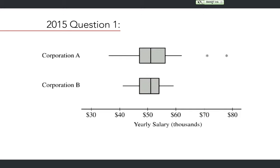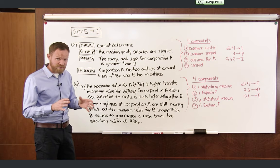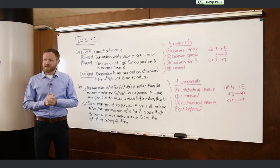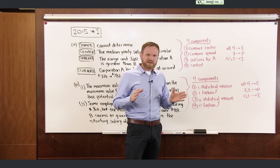For Part II, we think about why we might want to choose corporation B. What I noticed is that some employees at corporation A were still making the same $36,000 as when they were hired, whereas at corporation B the minimum value has increased from $36,000. The advantage of corporation B is that it seems to guarantee you will get some sort of raise from your starting salary.